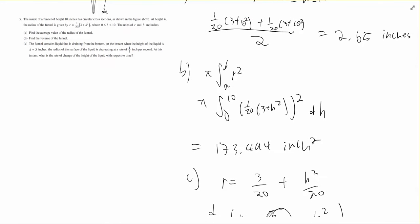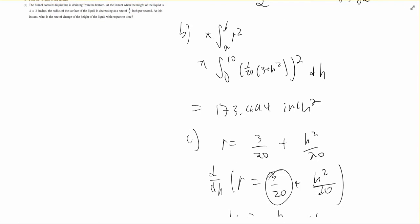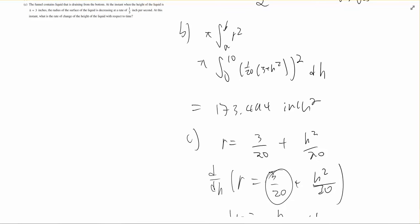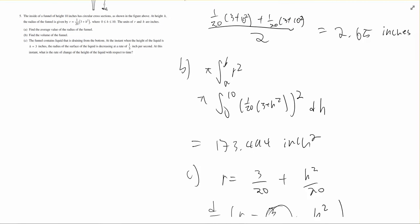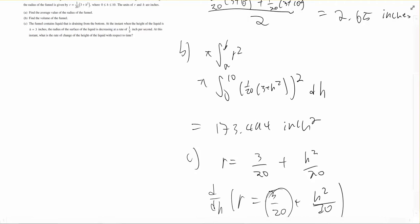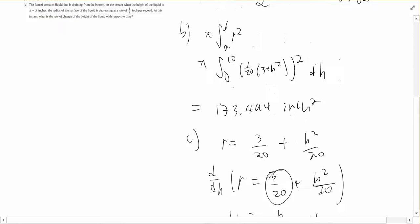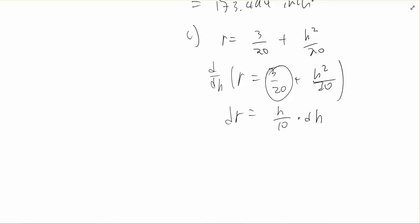We are given that the height of the liquid is 3 inches and the rate of radius is decreasing at 1 over 5 inch per second. So we are given these two pieces of information.